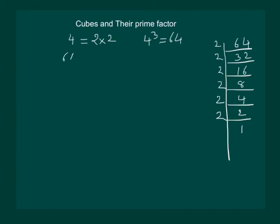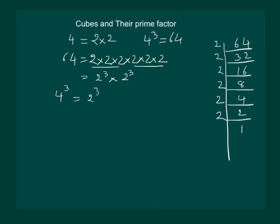After prime factorization of 64, 64 can be written as 2 into 2 into 2, 6 times, which is same as 2 cube into 2 cube. That means that 4 cube is equal to 2 cube into 2 cube. That is, if 4 is equal to 2 into 2, then 4 cube is equal to 2 cube into 2 cube.